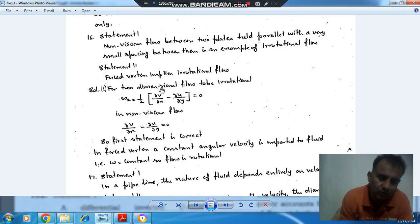As there is no change in V in the X direction and no change in U in the Y direction, del V by del X equals del U by del Y equals 0. So this quantity becomes 0 for non-viscous flow because velocity will not change. Therefore, the first statement is correct.